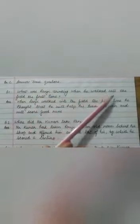Now we have question and answer children. What was Ranji thinking when he walked into the field the first time? Answer is when Ranji walked into the field the first time, he thought that he will help his team to win and will score good runs.